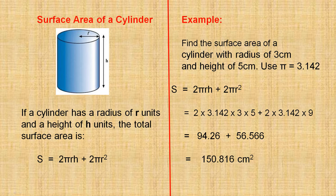The surface area of a cylinder. If a cylinder has a radius of r units and a height of h units, the total surface area is 2 pi r h plus 2 pi r squared.